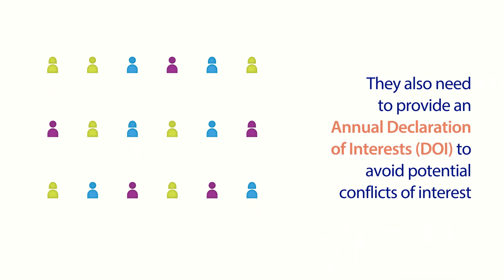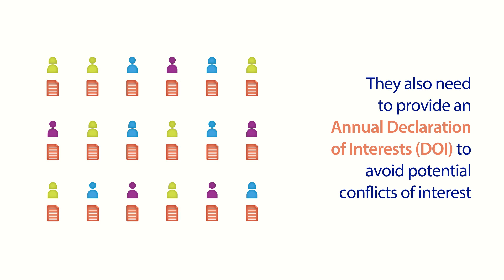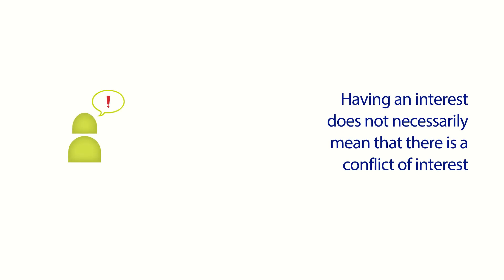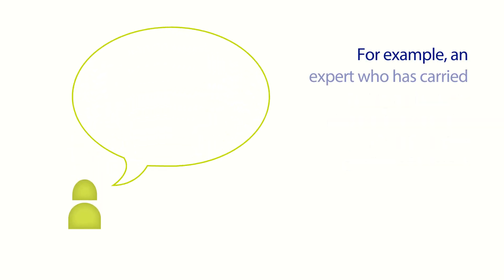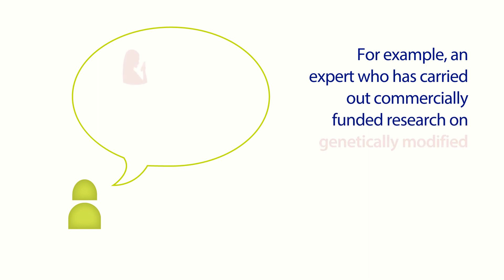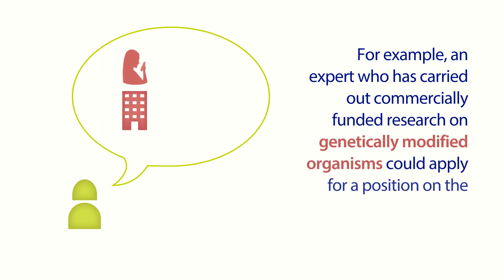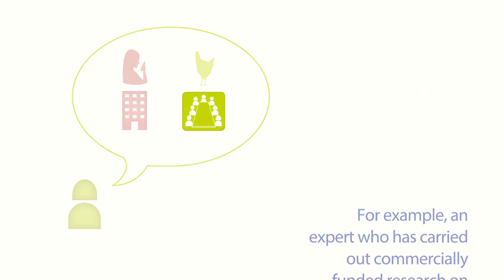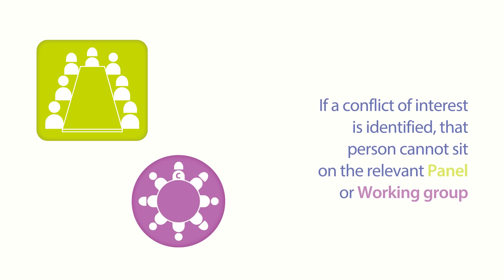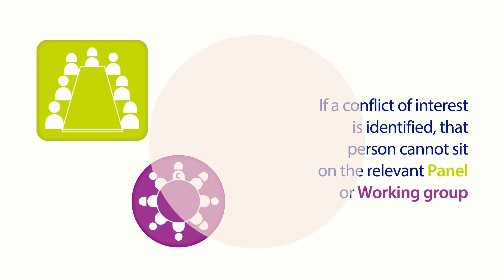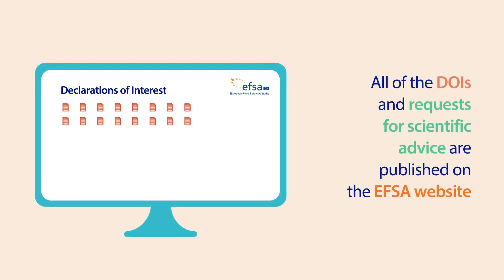They also need to provide an annual Declaration of Interests to avoid potential conflicts of interest. Having an interest does not necessarily mean that there is a conflict of interest. For example, an expert who has carried out commercially funded research on genetically modified organisms could apply for a position on the Animal Health and Welfare panel. If a conflict of interest is identified, that person cannot sit on the relevant panel or working group. All of the DOIs and requests for scientific advice are published on the EFSA website.